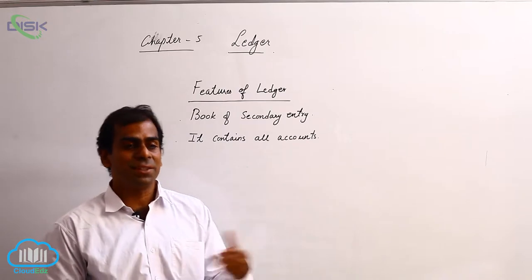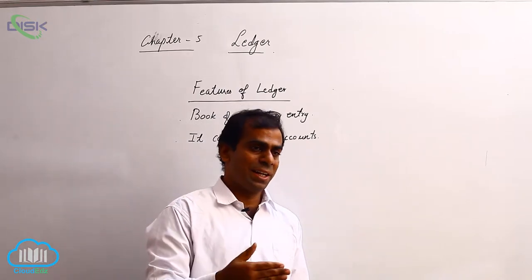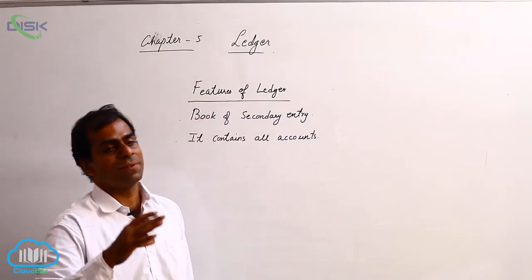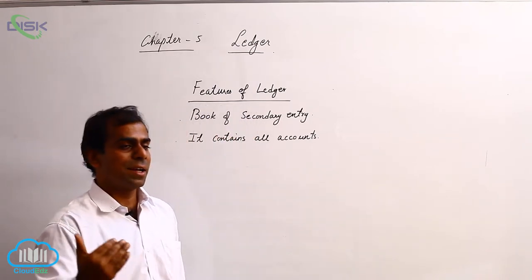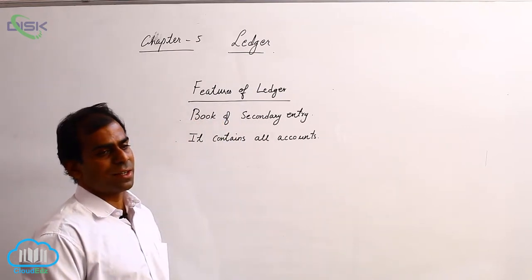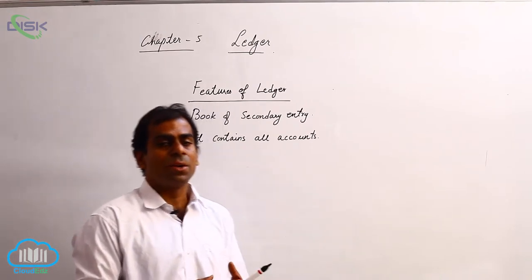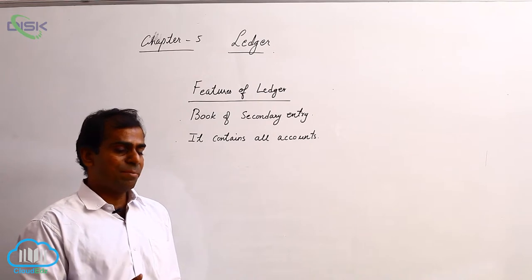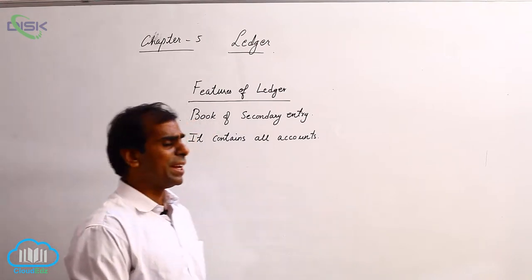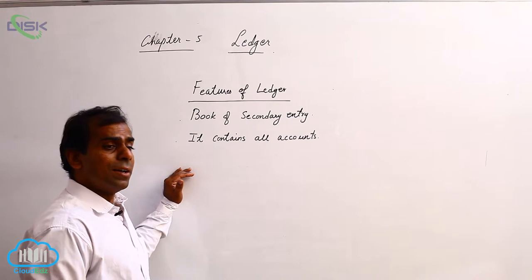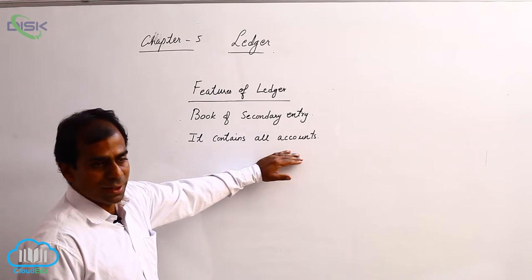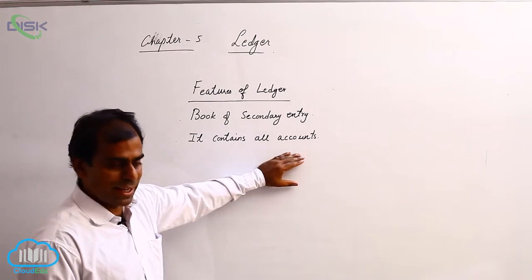You have written many journal entries. In those journal entries, for example, one entry is cash to capital, one is cash to sales, one is rent to cash, one is salary to cash, one is cash to commission, and so on. Each time you see a journal entry, sometimes a name that was previously mentioned repeats or a new name appears. Whenever a new name appears in a journal entry, you have to create an account for it in the ledger.